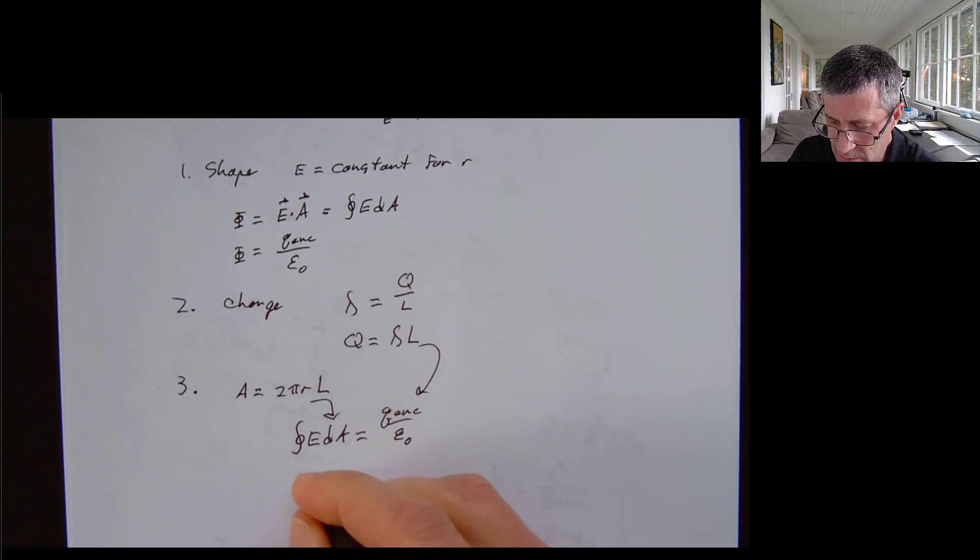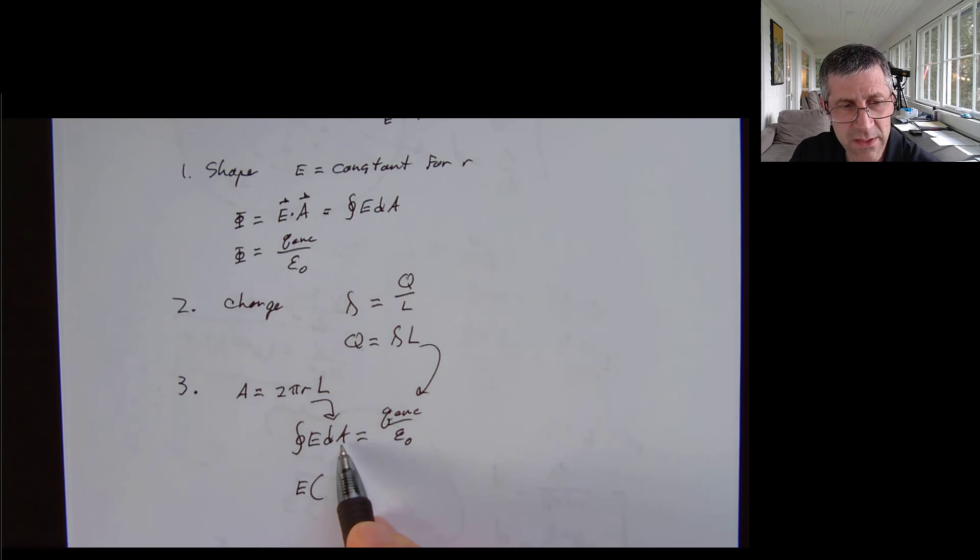So E's a constant. I'm going to pull that out. My closed surface integral of my area, it's my total area. So the integration on this for Gauss's law is usually not a challenge because I'm covering my entire two-dimensional surface.